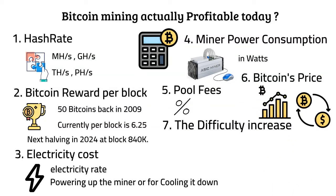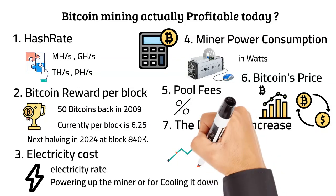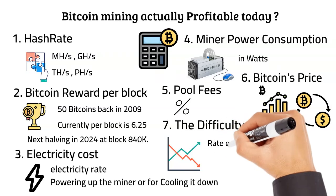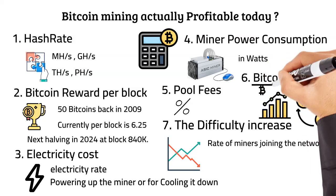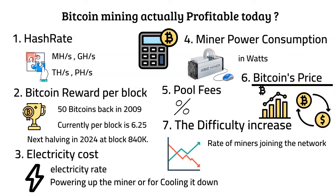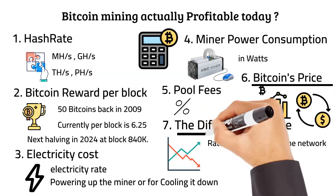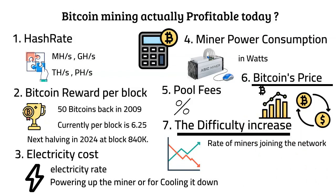Number 7: The difficulty increase per year. This is probably the most important and elusive variable of them all. The idea is that since no one can actually predict the rate of miners joining the network, neither can anyone predict how difficult it will be to mine in 6 weeks, 6 months, or 6 years from now. In fact, in all the time bitcoin has existed, difficulty has dropped only a handful of times, even at times when the price was relatively low. These last two factors are the reason that no one will ever be able to give a complete answer to the question: is bitcoin mining profitable?